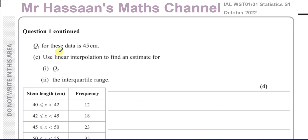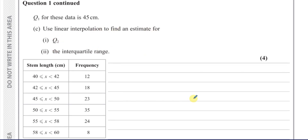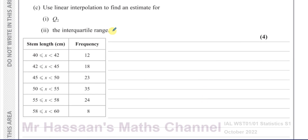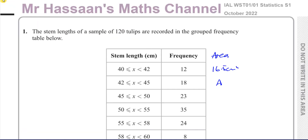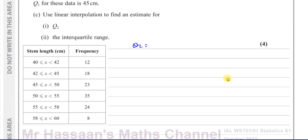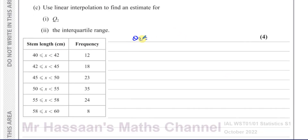Now for part 1C, it says Q1 for these data is 45 — that means the lower quartile. Use linear interpolation to find an estimate for Q2 and the interquartile range. Q2 is the median, the middle quartile. There are 120 tulips, so Q2 is at position 120 ÷ 2 = 60. Because it's grouped data, we don't know exact values so we look for the 60th position.